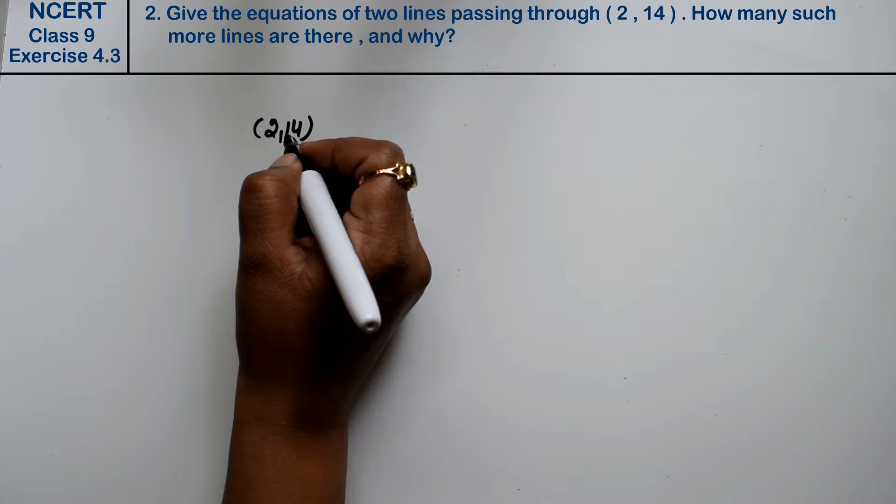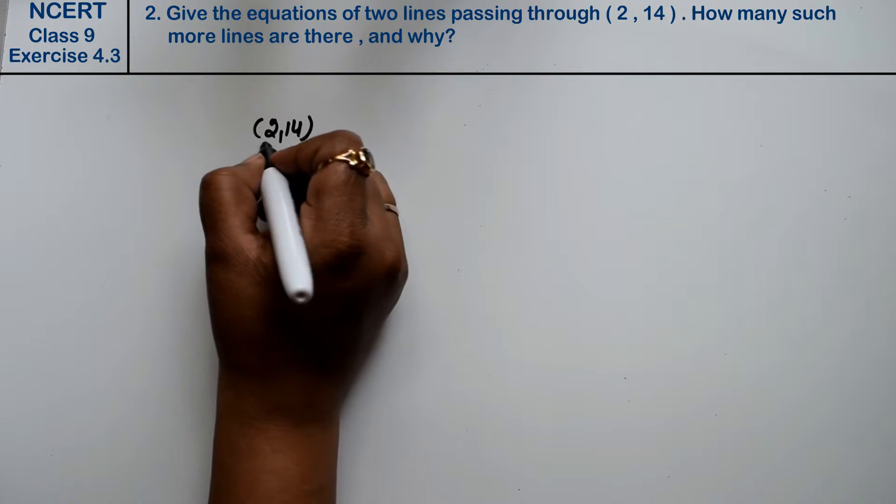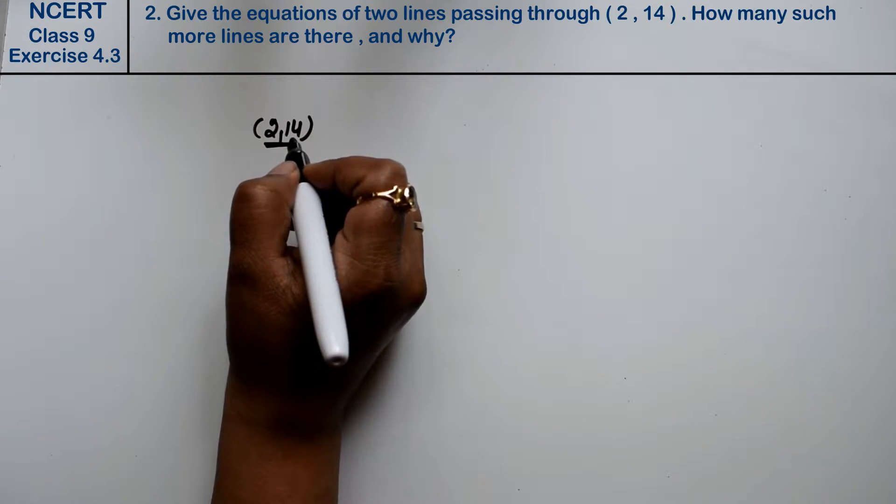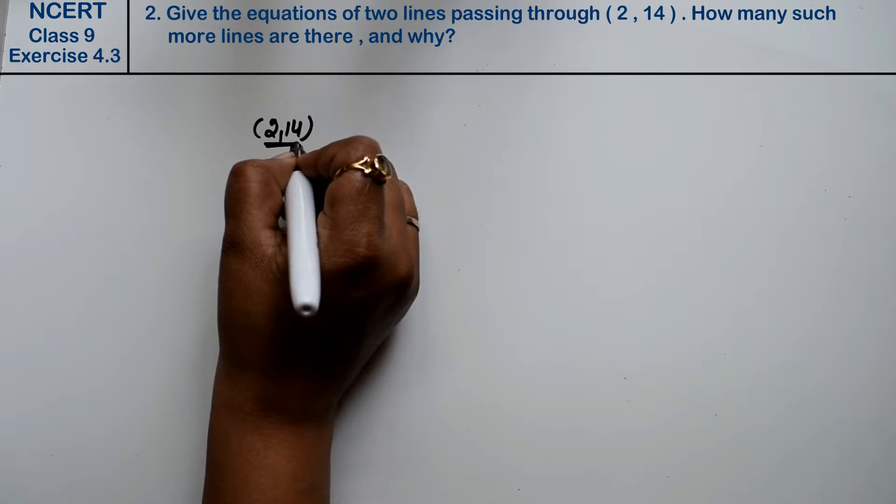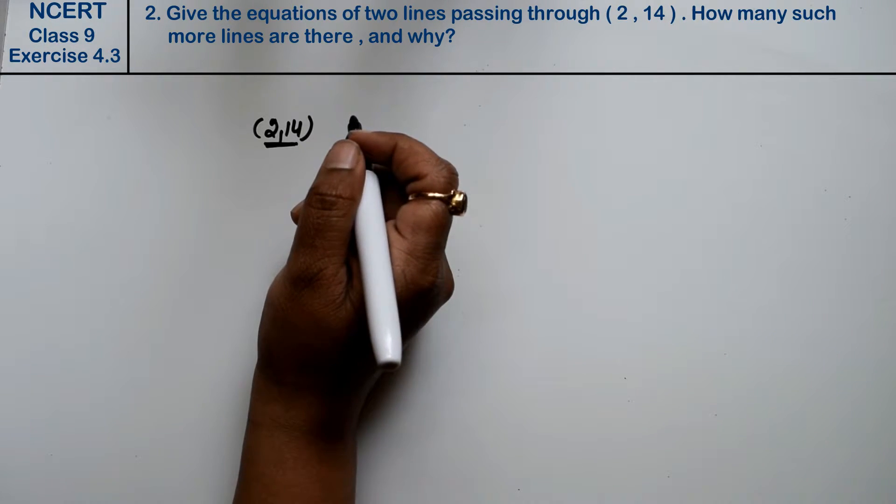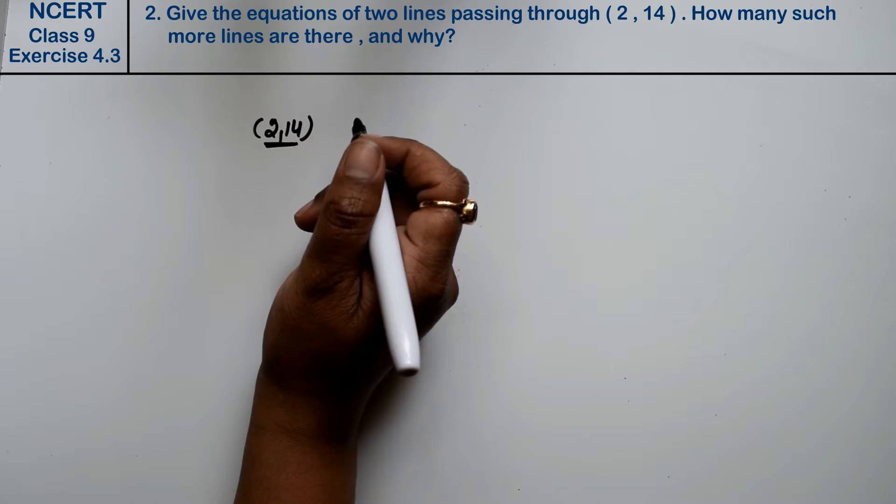Line equation - we need to make lines that pass through this point. Give the equation of 2 lines, 2 lines ki equation, jo is point se pass ho. How many more such lines are there and why? How many more lines can be made and why can they be made, right friends?